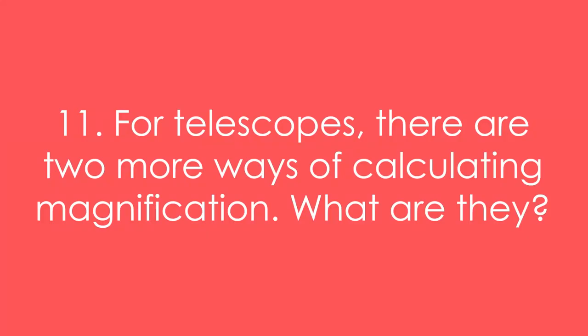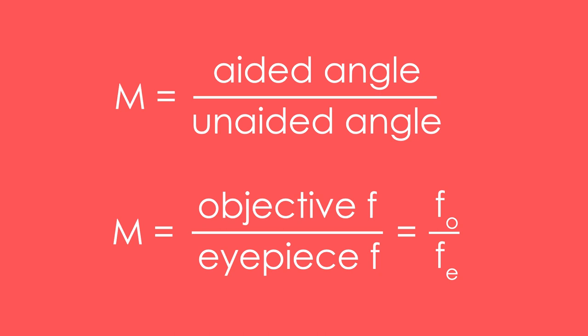Finally, mostly for those doing astro, for telescopes there are two more ways of calculating magnification. What are they? It can be calculated also from angles, so long as they're small angles. So we take the angle an object subtends when you're looking through a telescope, and divide that by the angle that the object subtends with just your naked eye. We can call those the aided and unaided angles respectively.